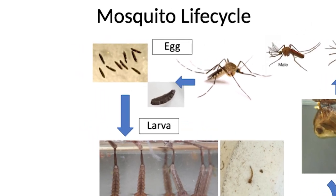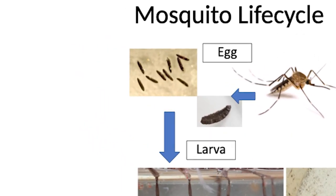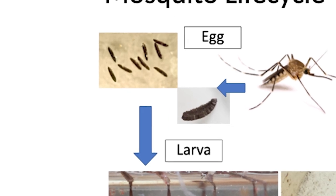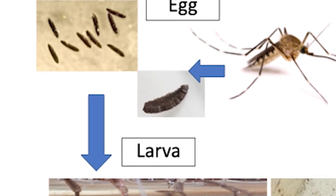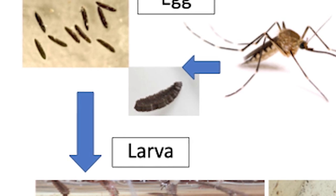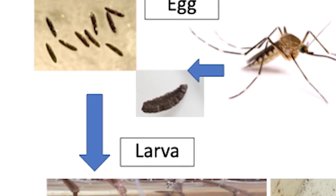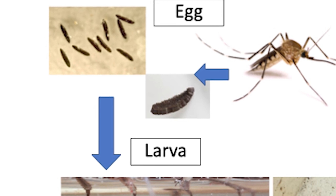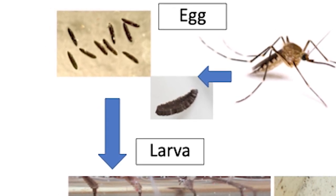Mosquitoes start their life cycle as an egg. Depending on the species, they're laid in different types of habitats and in different ways. Here you see these single long ovals — those will be laid on some sort of surface like leaves on the ground, inside of a tire, somewhere that will eventually become flooded with water. Those eggs sit and wait until water inundates the area; that's their signal to hatch. Other mosquitoes lay eggs in rafts — one of these rafts can hold 100 to 200 eggs, producing a lot of mosquitoes. They lay them on the surface of standing water, more in the heat of the summer.